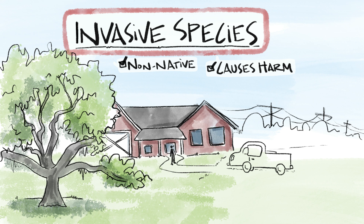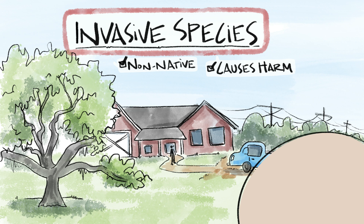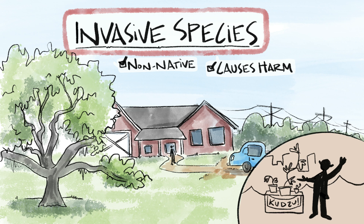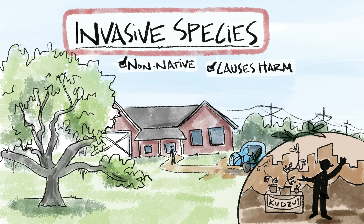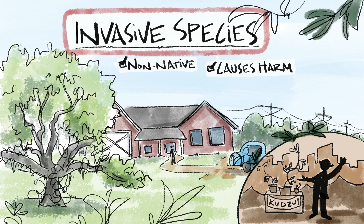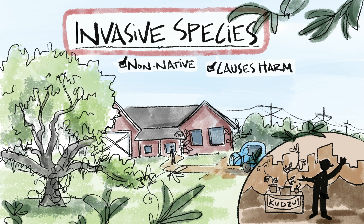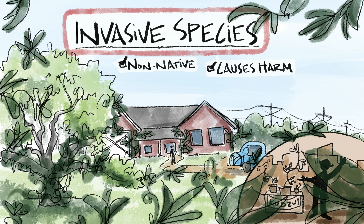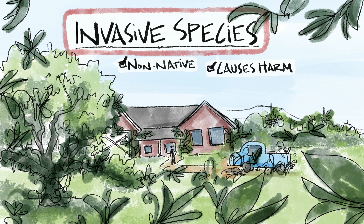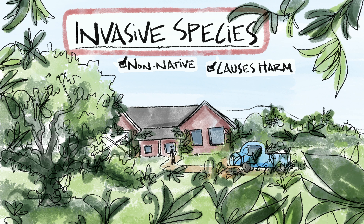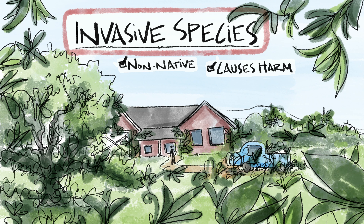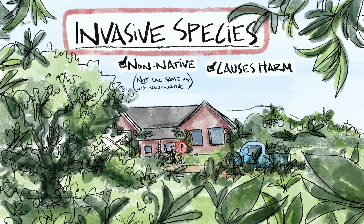One example is kudzu. Kudzu was introduced to the United States in 1876 at an exposition in Philadelphia. It can grow up to a foot a day, allowing it to easily out-compete and kill other plants. It even grows over power lines and poles, causing damage that results in the loss of power to communities.